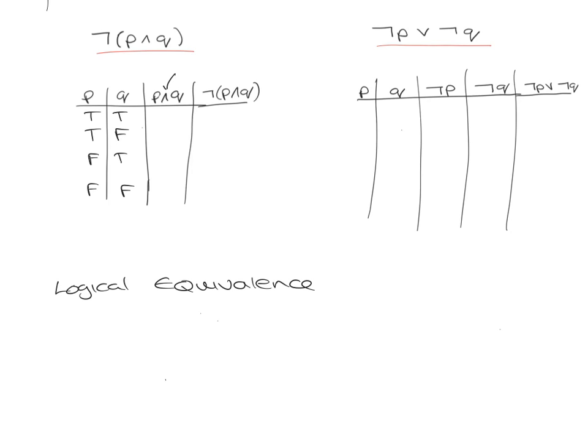Now because this is P and Q, they have to both be true for this statement to be true. So they're both true there, but there's only one true there, therefore it's false. One true there so it's false, and no true there so it's false.